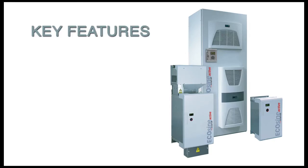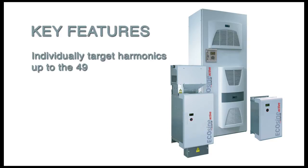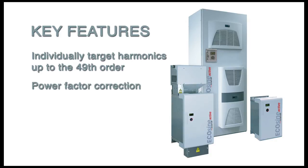The Schaffner Active Harmonic Filters is the latest in active harmonic filter technology to mitigate harmonics within the electrical network. These Schaffner Active Harmonic Filters are used in applications where nonlinear loads are causing harmonic disturbance on the network. Some key features of the Ecosign Active Filters is that it can individually target harmonics up to the 49th order, perform power factor correction, as well as load balancing.